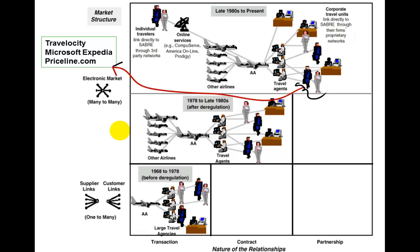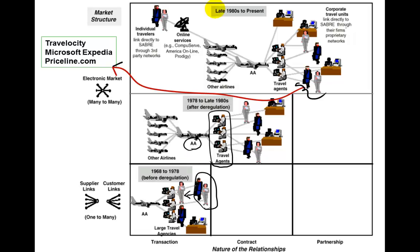Let's use this picture to illustrate the change in the airline industry due to the impact of information technology. If you remember — maybe you're too young to remember — it used to be in the late 60s and 70s that as a traveler you pretty much had to go to a travel agent to book a ticket for an airline if you needed to fly. After 1979 to the late 80s, after deregulation in the airline industry, travel agents were allowed to use online reservation systems such as the one developed by American Airlines, which is called Sabre.